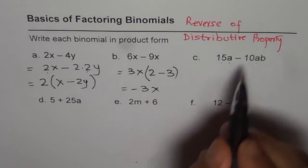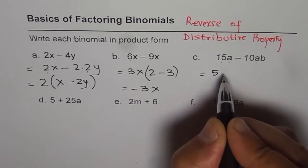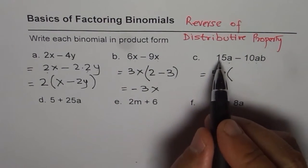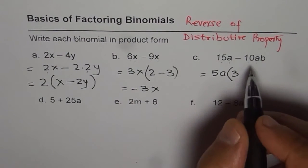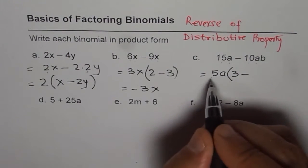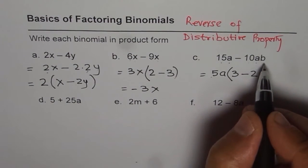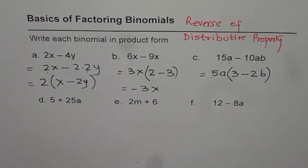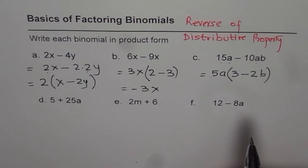In the numbers we have 5 as a common factor, so we can write 5a as a common factor. 15a divided by 5a gives us 3. Minus 10ab divided by 5a: 10 divided by 5 gives 2, and the a's cancel, leaving b. So 5a times (3 minus 2b) is the factored form of the binomial given to us.